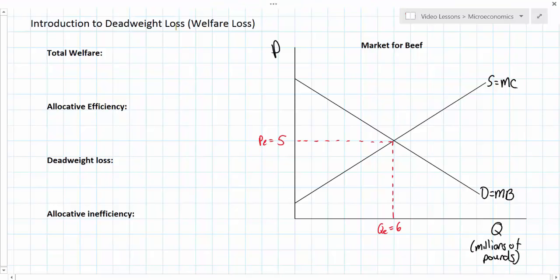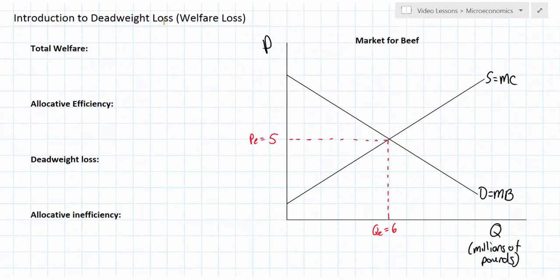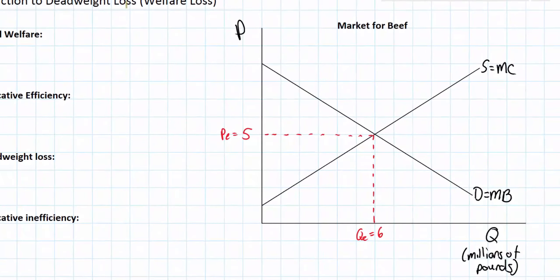To guide us today we're going to be looking at the same market for beef that we looked at in our consumer and producer surplus video lesson. Notice in this graph that I've added an equilibrium price and an equilibrium quantity. This market has cleared and is in equilibrium at a price of five dollars and at a quantity of six million pounds of beef. The first thing I want to do is calculate the amount of consumer surplus and producer surplus in the market for beef when it is at equilibrium.